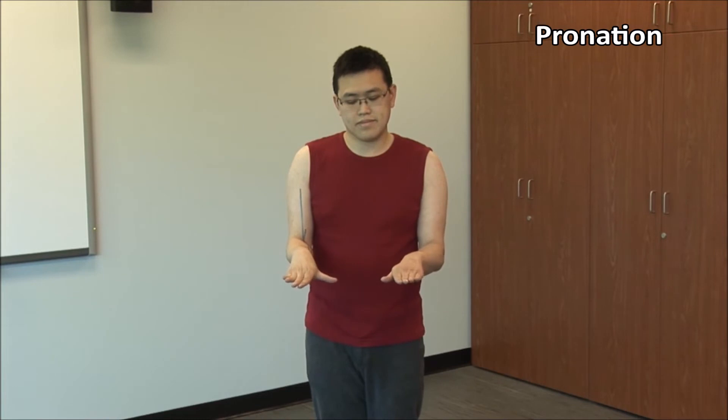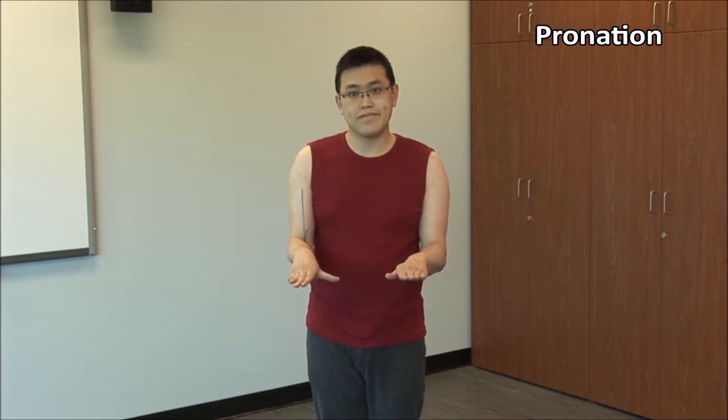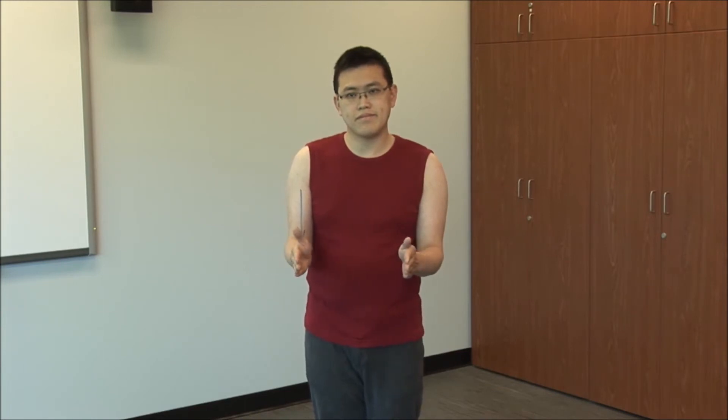You can use the thumb as a pointer. Have the patient turn the palm down — this is pronation, normally 75 to 90 degrees. From the neutral position, have the patient turn the palm up — this is supination, normally 85 to 90 degrees. Pronation and supination occur at the proximal and distal radio-ulnar articulations. The humeral radial joint also allows the radius to rotate on its axis during these movements.